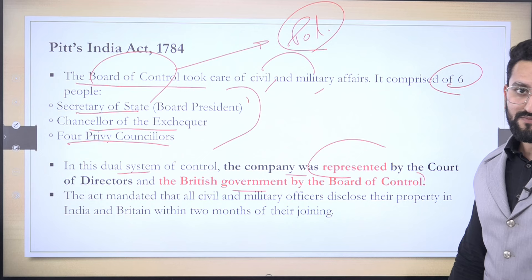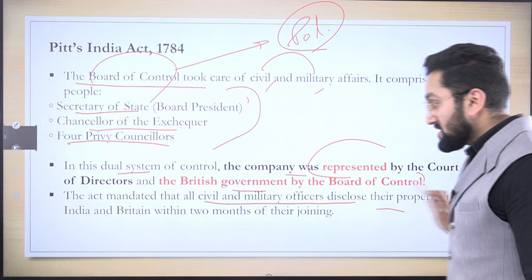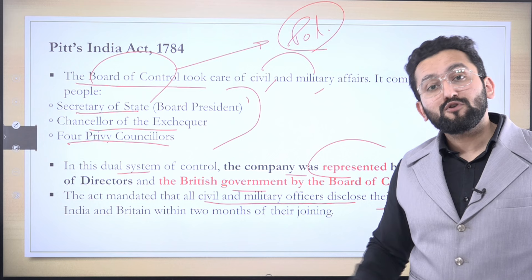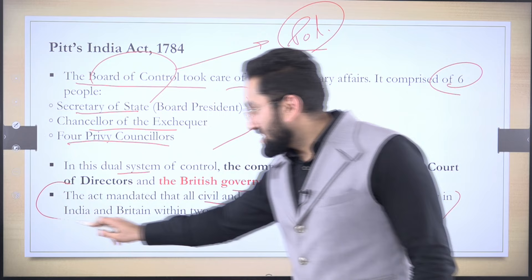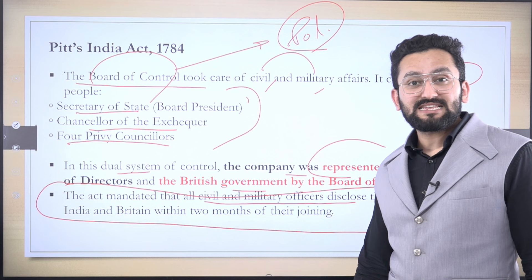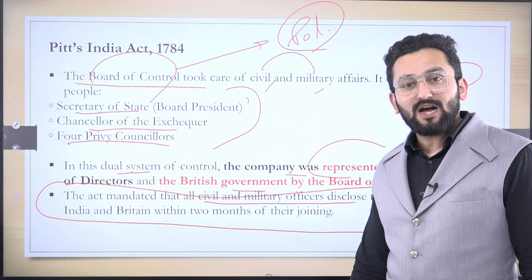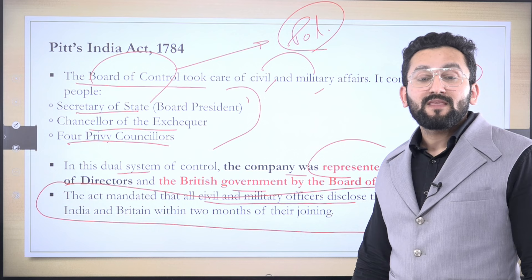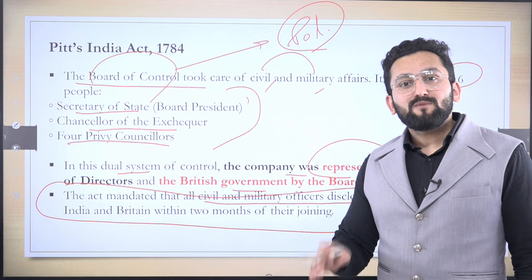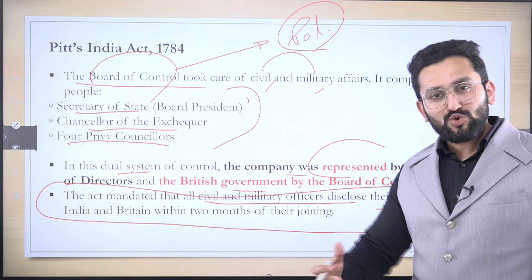This act mandated all civil officers disclose their property. If you got appointed as an officer in the English East India Company, you had to report your property within two months. Since you are aspiring to be part of Indian administration, there is a similar clause in India today as well — when you join the IAS, you sign various forms in the orientation program and are required to give all details of movable and immovable properties within a given time, so a track can be put over how much wealth you create within two or three years.